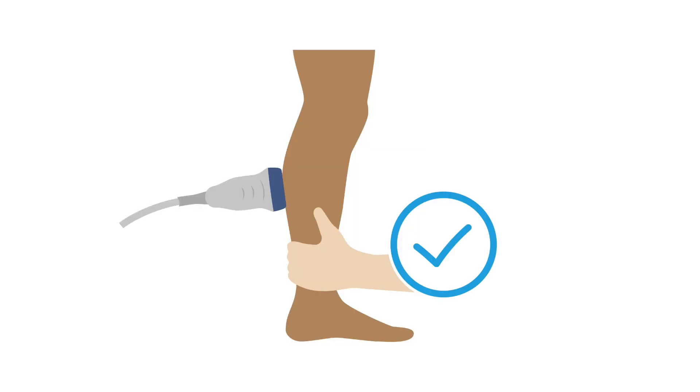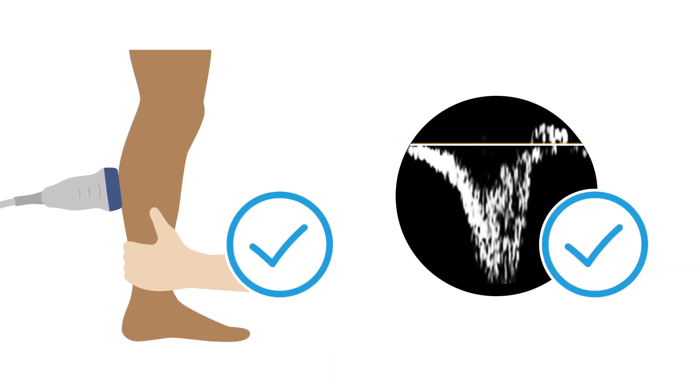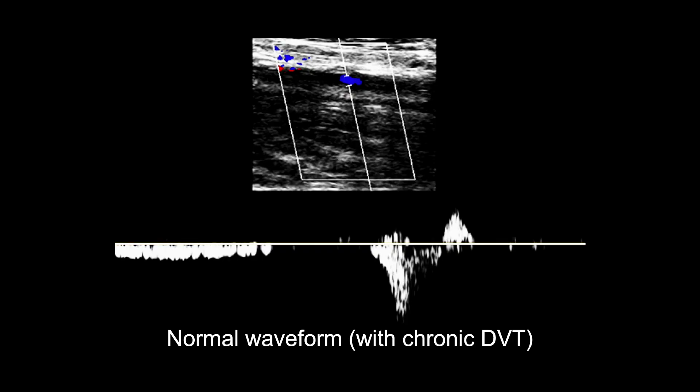Distal augmentation can be performed on a chronic clot because of its increased adherence to the vein wall, and should also show a normal upside-down peak demonstrating an augment of flow below the baseline. In this image, you can only see a small patch of blue in the vein at the top, as there is chronic clot present. The clot is only partially occlusive though, and so the waveform still shows phasic flow and a normal distal augment.